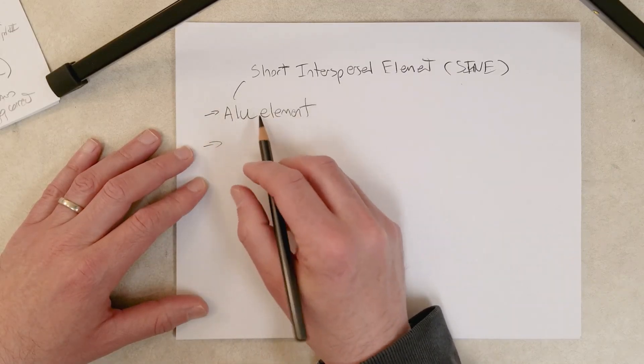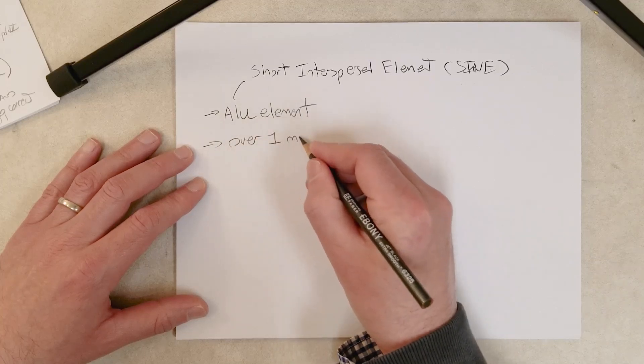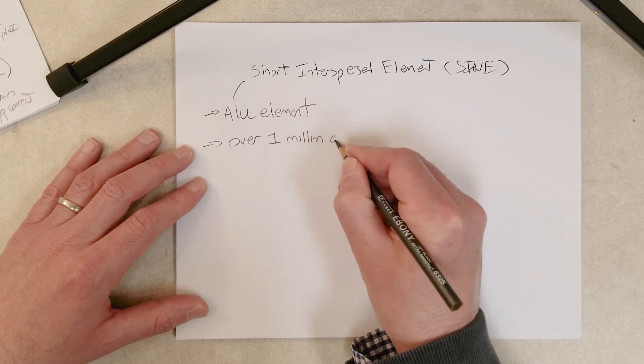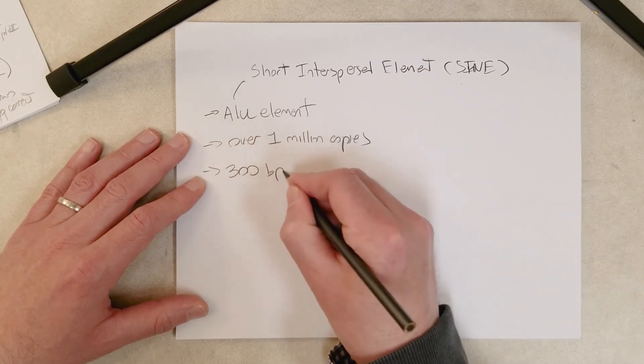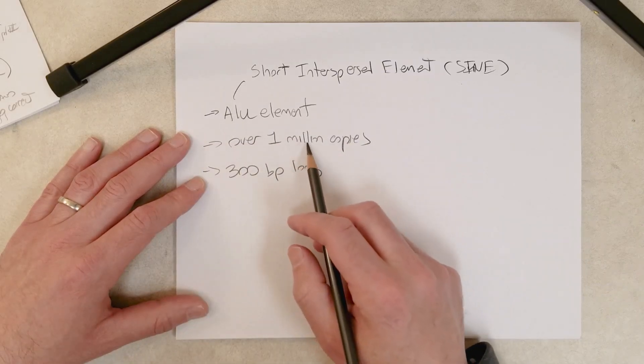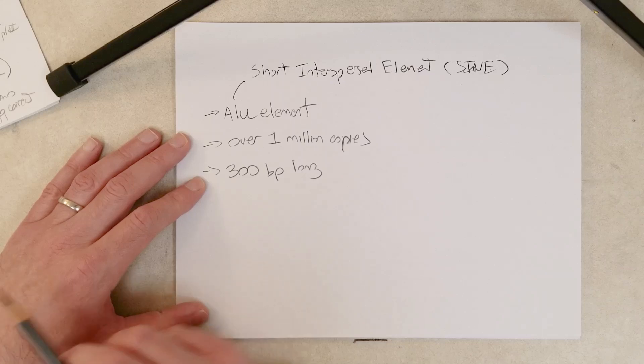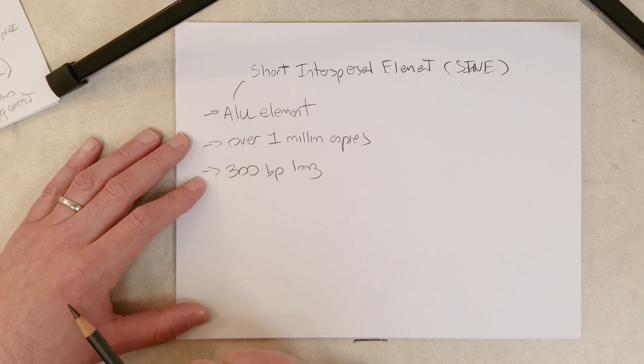The ALU element in the human genome exists in over 1 million copies, and the ALU element is about 300 base pairs long. So wow, that'd be about 300 million base pairs of our genome comprised of just this element.